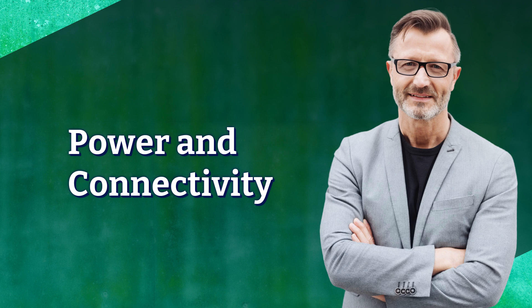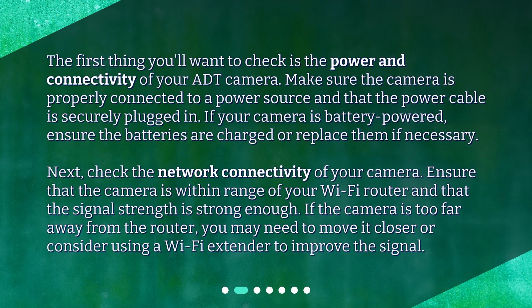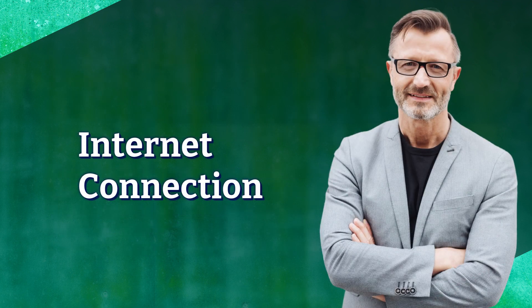Power and Connectivity. The first thing you'll want to check is the power and connectivity of your ADT camera. Make sure the camera is properly connected to a power source and that the power cable is securely plugged in. If your camera is battery-powered, ensure the batteries are charged or replace them if necessary. Next, check the network connectivity of your camera. Ensure that the camera is within range of your Wi-Fi router and that the signal strength is strong enough. If the camera is too far away from the router, you may need to move it closer or consider using a Wi-Fi extender to improve the signal.